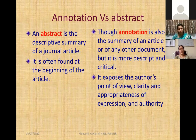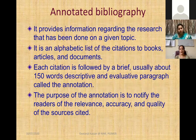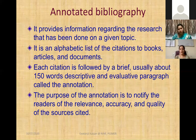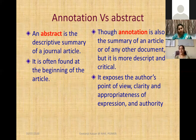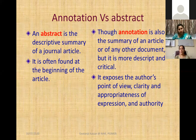Sometimes students get confused about what is annotation versus abstract. Abstract is a descriptive summary of a journal article, often found at the beginning. Annotation, though also a summary of an article or document, is more descriptive and critical — it exposes the author's point of view, clarity, and appropriateness of expression and authority, and it is usually found at the end of the document.